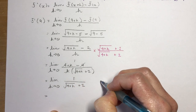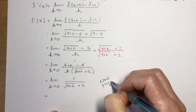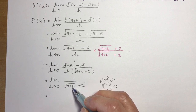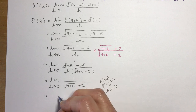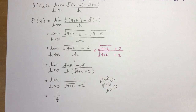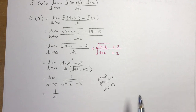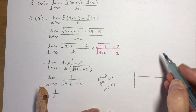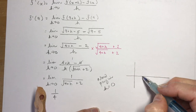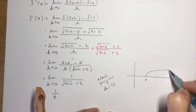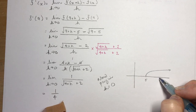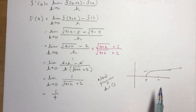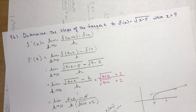Now we plug in h equals zero: √(4+0) is 2, and 2 plus 2 is 4, giving us 1 over 4. So the slope of the tangent is one quarter. On a sketch of √(x minus 5) — the radical function shifted right five units — when x is 9 you have a very small, flat slope, and that is indeed one quarter.